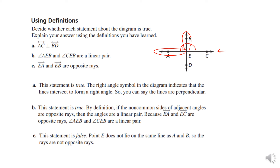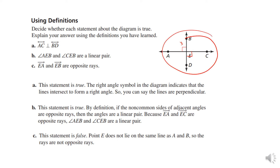You want to be able to judge things and say: what information can I get from this picture? I can see this is 90 degrees, which means this is also 90 degrees by vertical angles. But can I say that BD bisects AC? No, because there are no symbols telling me that AE and EC are congruent. Make sure you read your diagrams whenever you're solving a problem.